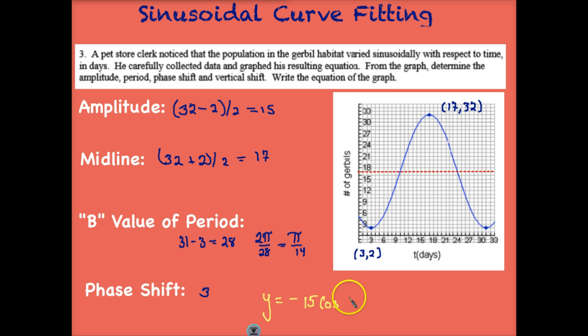Now we're ready for our B value, which we said was pi over 14. And then our phase shift is a positive 3, so we write that as x minus 3. We have a vertical shift up. Our midline is no longer at 0. It's at 17. So then we can have plus 17. And this is an equation that represents this graph.